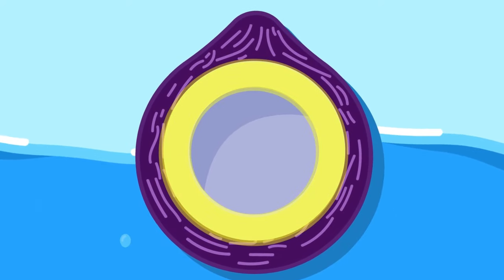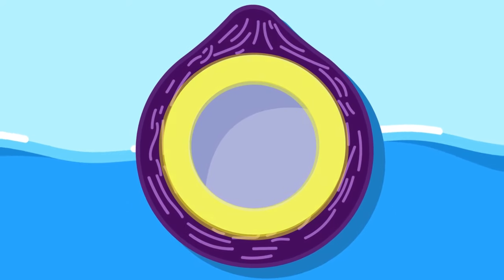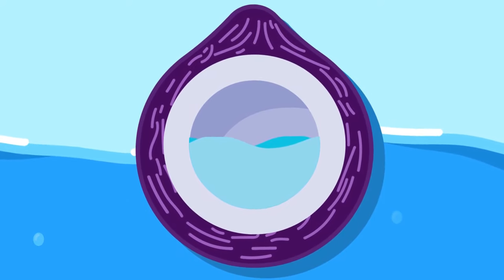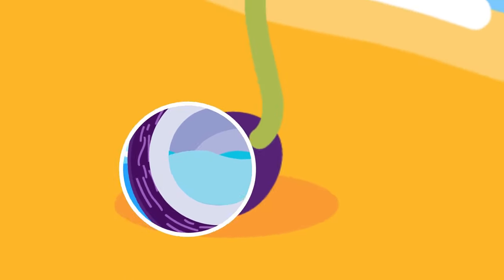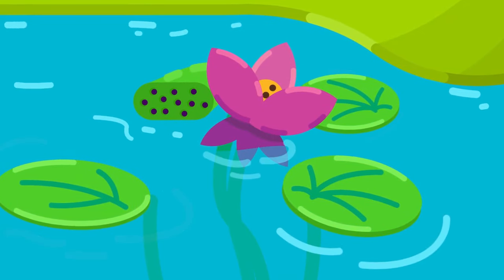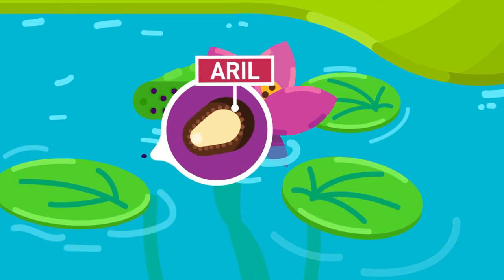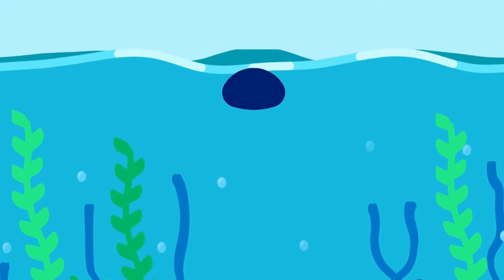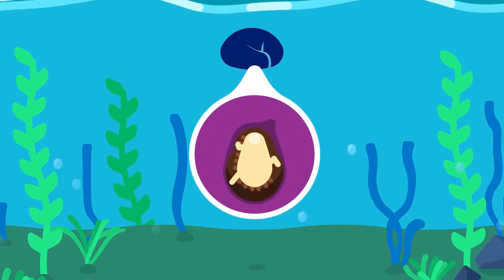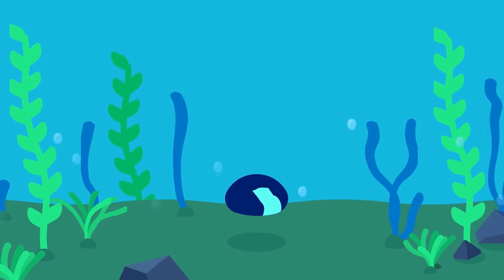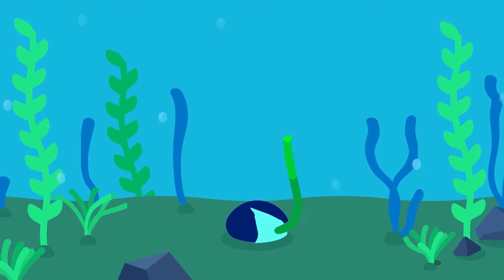Inside the skin, a fibrous husk containing numerous airspaces lightens the fruit and enables it to float. The seed within contains a store of food — the meat in the coconut — and there is sufficient water in the seed to enable germination even on sandy shores. Another example is the water lily seed, which has an aril, a small float that holds air. It can float away from the parent plant until the aril decomposes, then the seed sinks to the bottom of the river or pond and germinates.